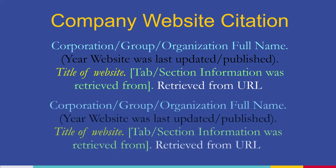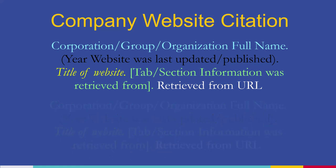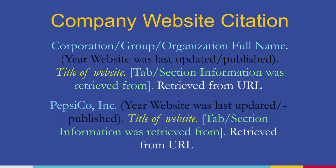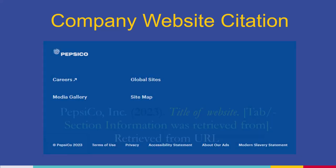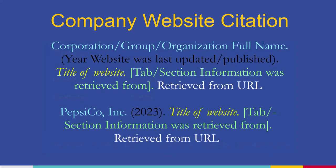Following our formula, we will put the full name of our company in the first section. Next, we will find the date of publication. For PepsiCo, this page has been updated in 2023, so I will plug that information into the first set of parentheses.